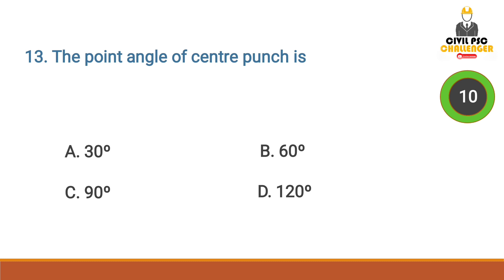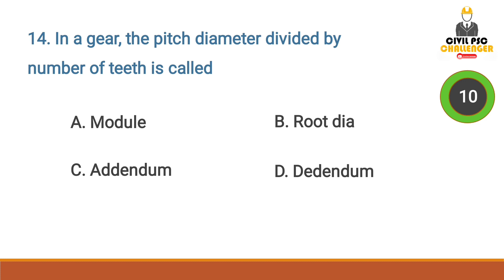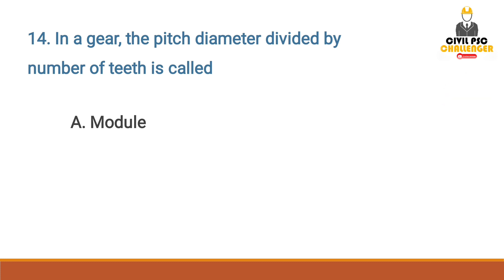The point angle of a center punch is — Answer option C: 90 degrees. In a gear, the pitch diameter divided by number of teeth is called — Answer option A: Module. In a gear, the pitch diameter divided by number of teeth is called a module.